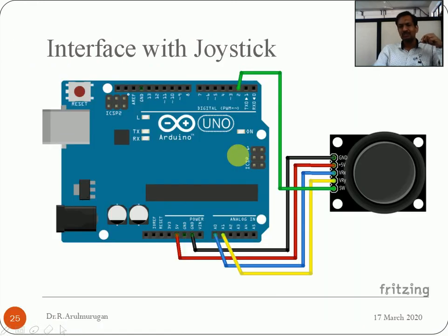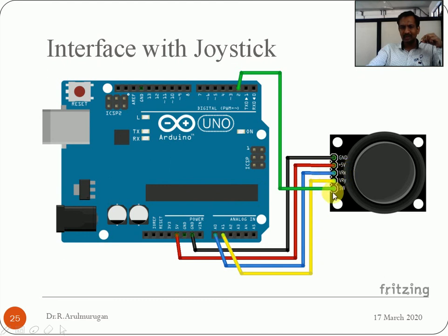For joystick interface: it has 5 lines - ground, +5V, and two analog outputs (X-axis in yellow and Y-axis in blue connected to analog input pins), plus one digital line connected to a digital pin for the push-button switch. So you give two analog inputs and one digital input from the joystick.